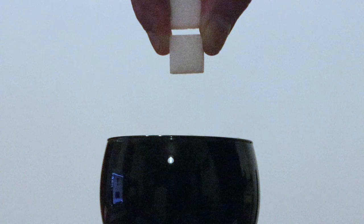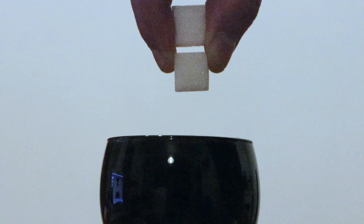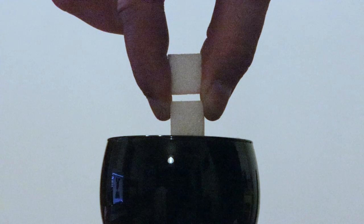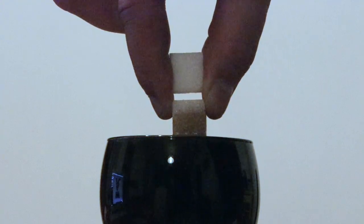Maintenant si je prends deux morceaux de sucre l'un au-dessus de l'autre, avec un espace entre les deux, qui correspond à ce que j'aurais produit dans le sol, avec un coup de binette, tout simplement. Et bien on voit que le café ne peut pas monter jusqu'au sucre du dessus.